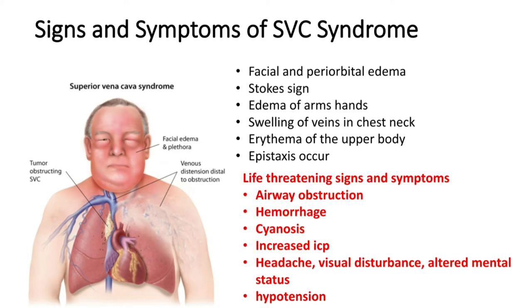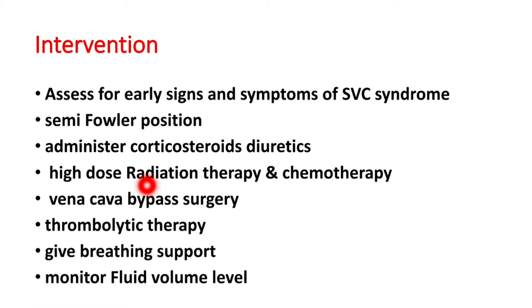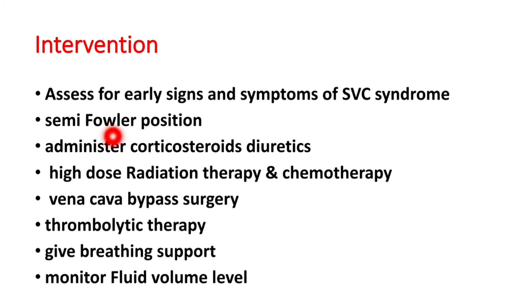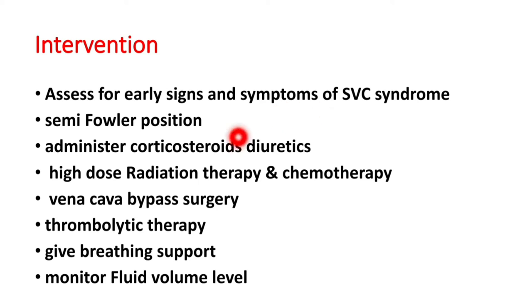Interventions: we have to assess for early signs and symptoms of superior vena cava syndrome. Give the patient a semi-Fowler's position because it will help in venous drainage from the upper half of the body and also facilitate breathing. Administer corticosteroids, as cancer can cause inflammation of cells and tissues, to decrease that inflammation.